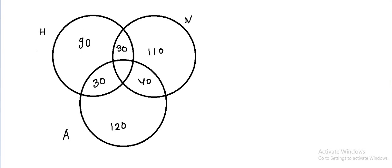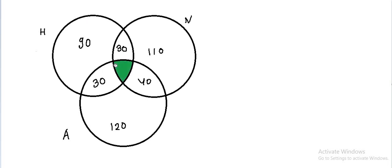So we have to find out the number of students who have subscribed to all three. Suppose this is the green region — the value we have to find out.